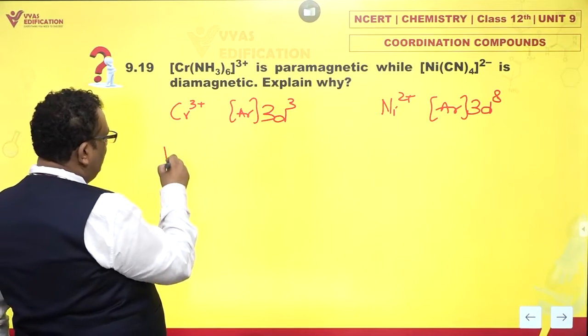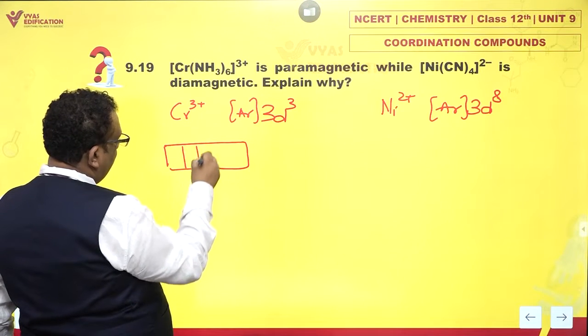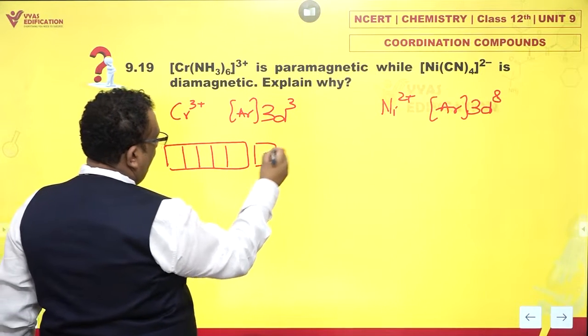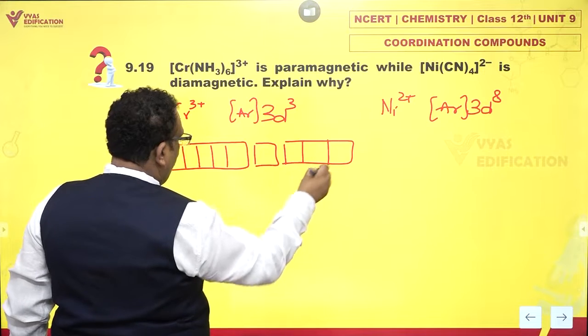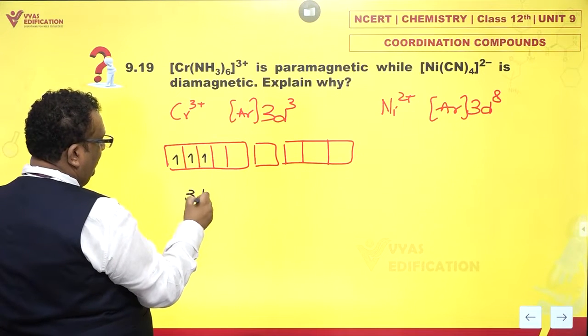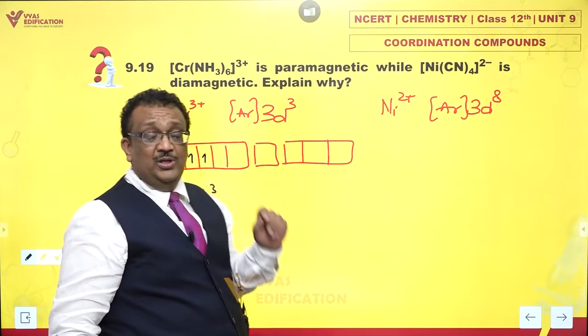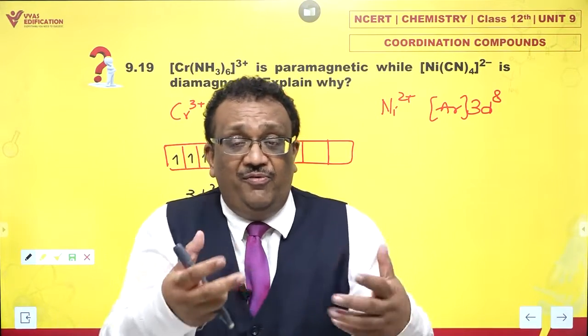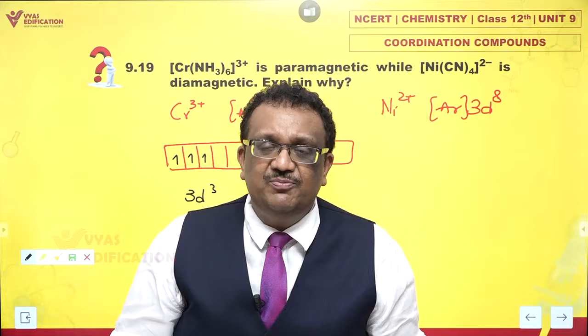So let's start with chromium itself. Now, let's explore this complex. 1, 2, 3. This is 3d³. Now, as 6 ammonia molecules approach, they will donate lone pairs. Do you have space?